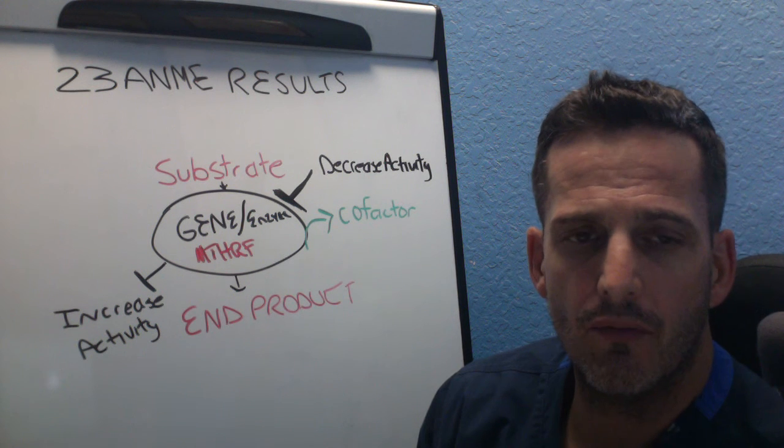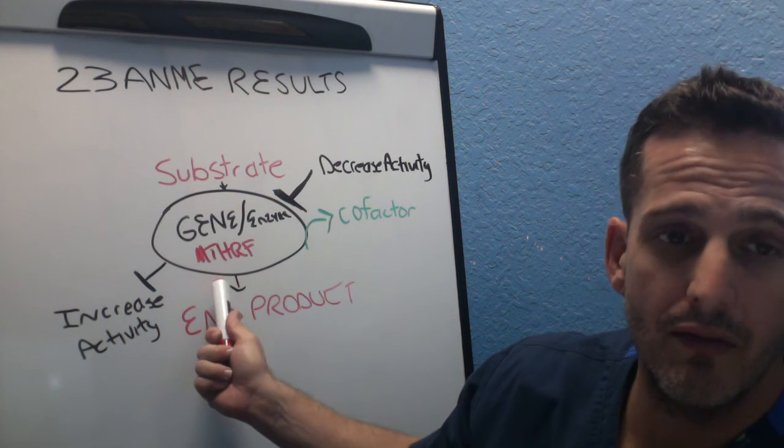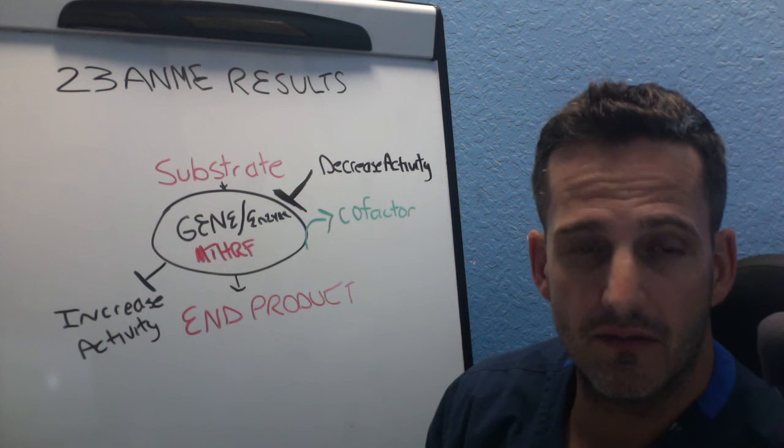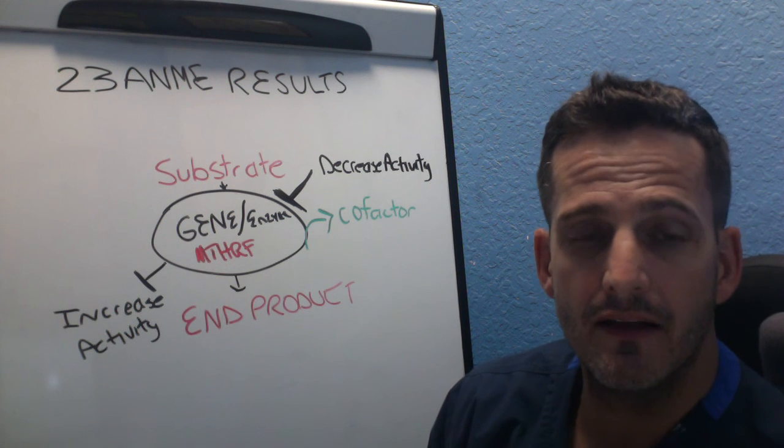And so really what happens is there's 23 different kinds of enzymes and MTHFR for some reason gets the most notoriety.